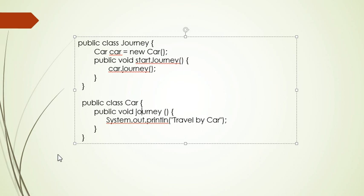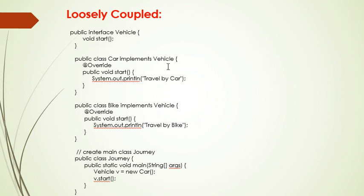Now, what about loose coupling? Loose coupling is a design goal that seeks to reduce the interdependencies between components of a system, with the goal of reducing the risk that changes in one component will require changes in any other component.